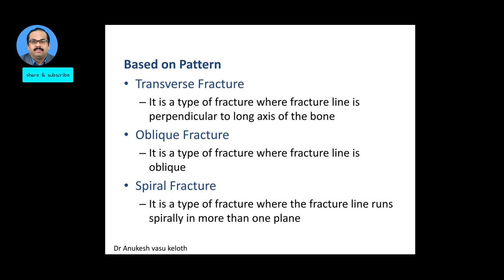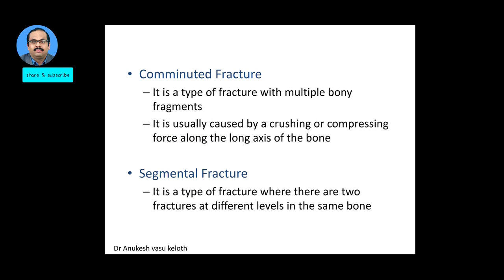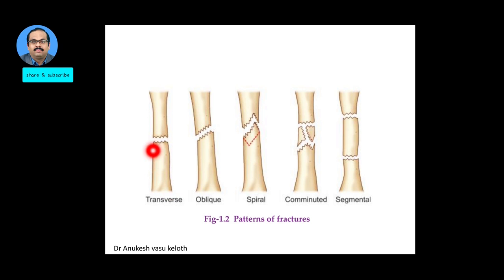Based on the pattern of the fracture line, you can classify it into: a transverse fracture where the line is perpendicular to the long axis; an oblique fracture where the line is oblique; a spiral fracture where the line runs spirally in more than one plane; a comminuted fracture with multiple bony fragments usually caused by a crushing force; and a segmental fracture where there are two fracture lines at different levels in the same bone.